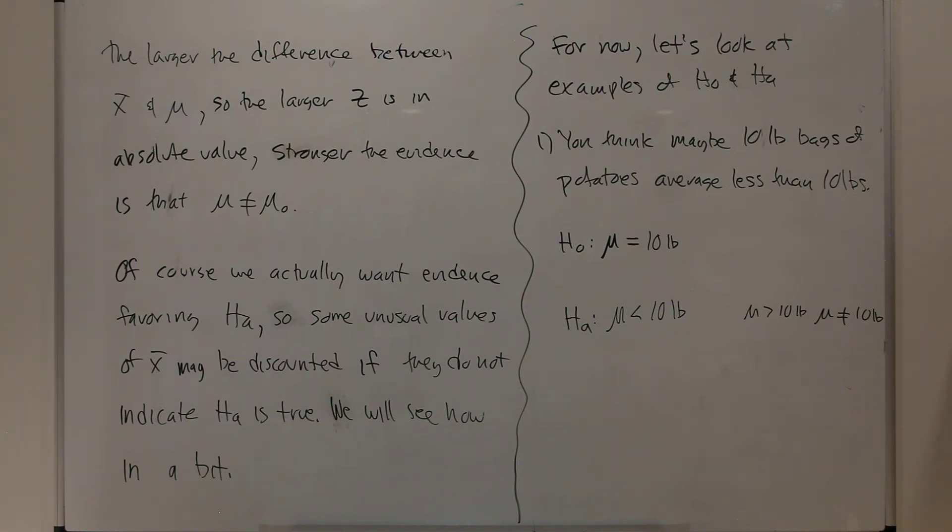So that's the setup. H0 is always mu as some number. It's always mu. It's not x-bar sitting there. It's the population mean, not the sample mean. There's always an equal sign. There's always a number.